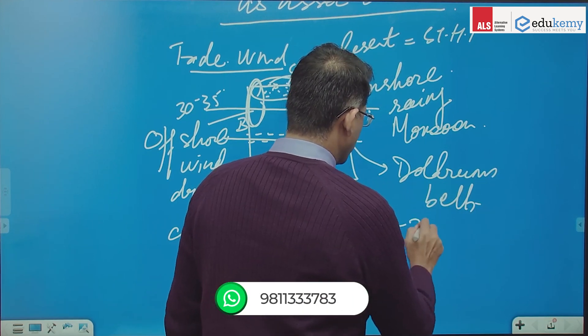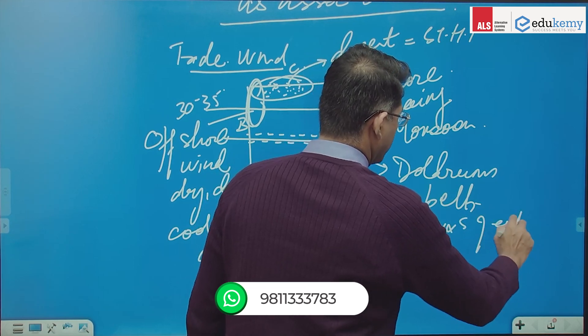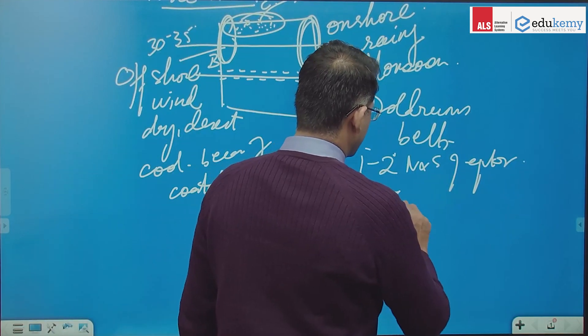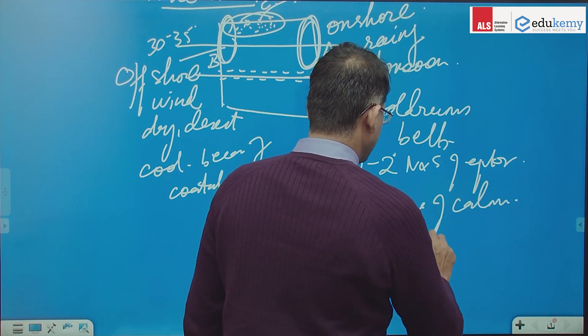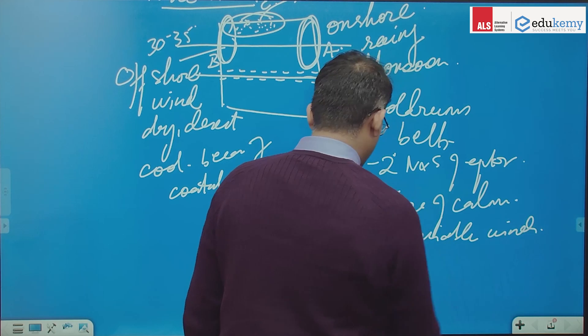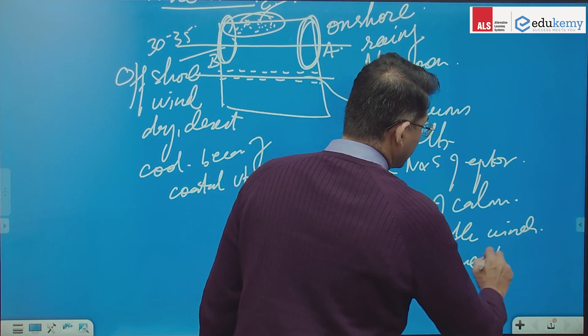say 1 to 2 degrees north and south of equator. This is a zone of calm conditions, variable winds, and with some thunderstorms,